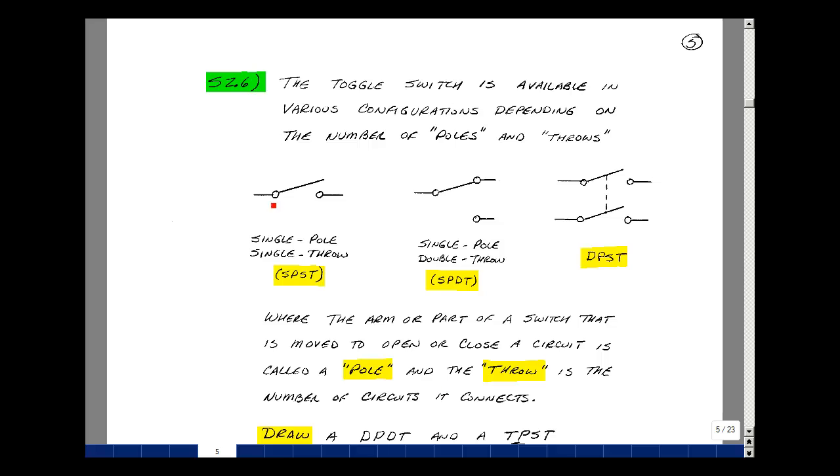For example, here is a single pull and a single throw. Here I have a single pull and a double throw. So I'll hook up this circuit and this circuit. Here I've got a double pull, but a single throw. So I'm just connecting up one circuit in either case.